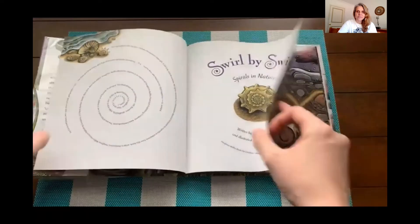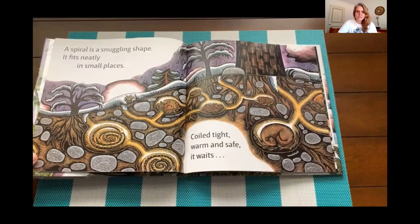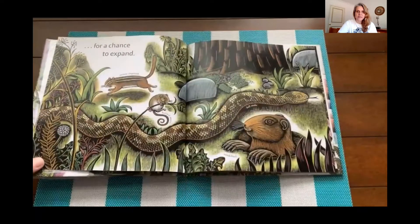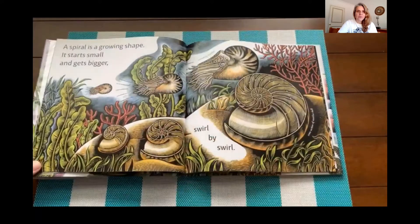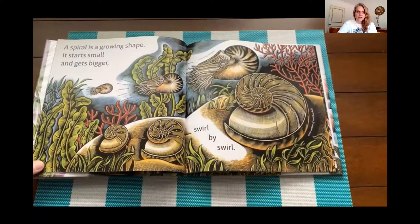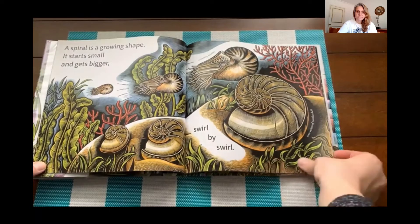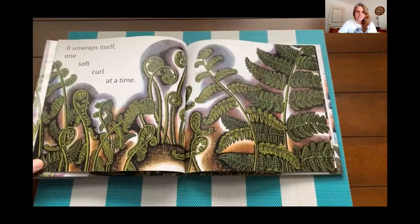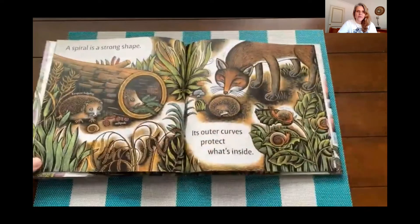Swirl by Swirl: Spirals in Nature. A spiral is a snuggling shape — it fits neatly in small places, coiled tight, warm and safe. It waits for a chance to expand. A spiral is a growing shape — it starts small and gets bigger, swirl by swirl. It unwraps itself one soft curl at a time.